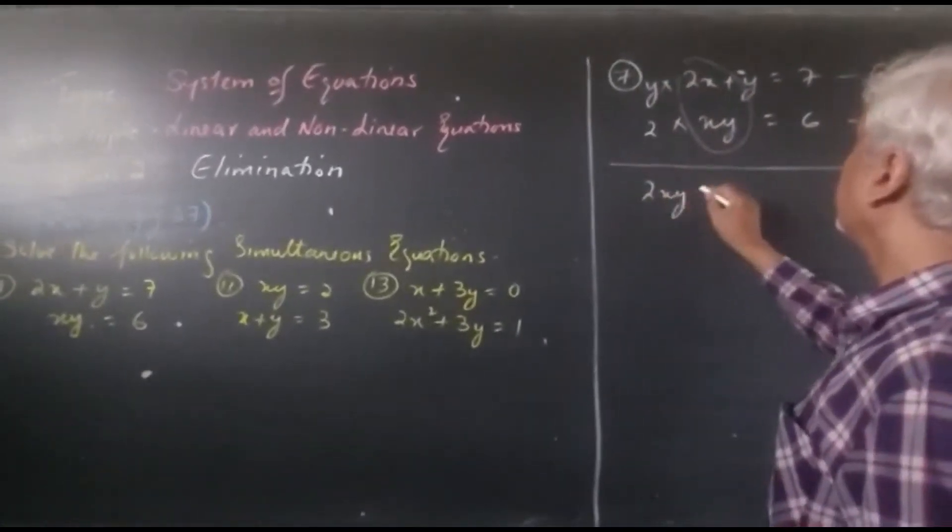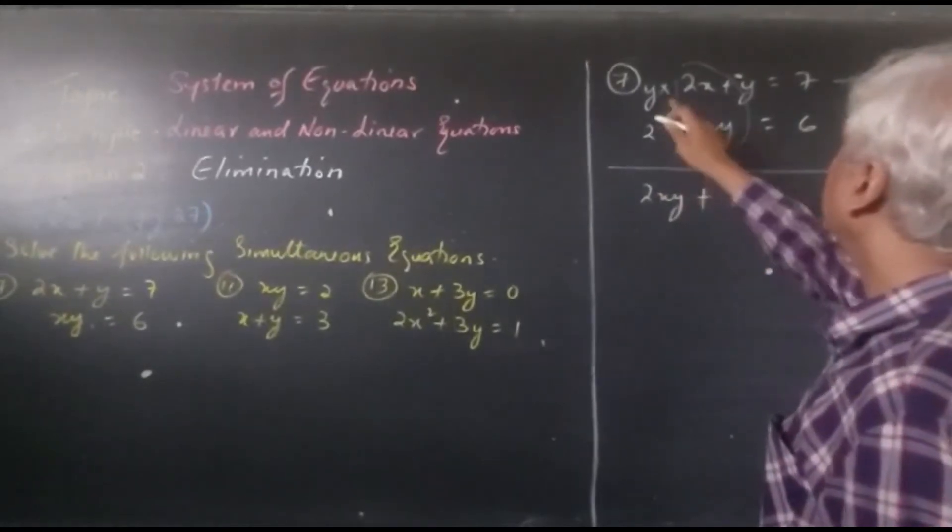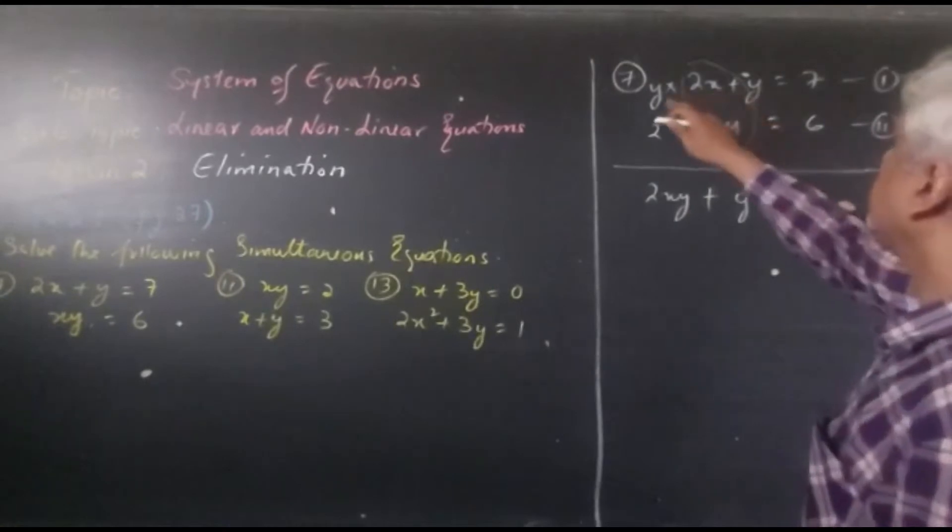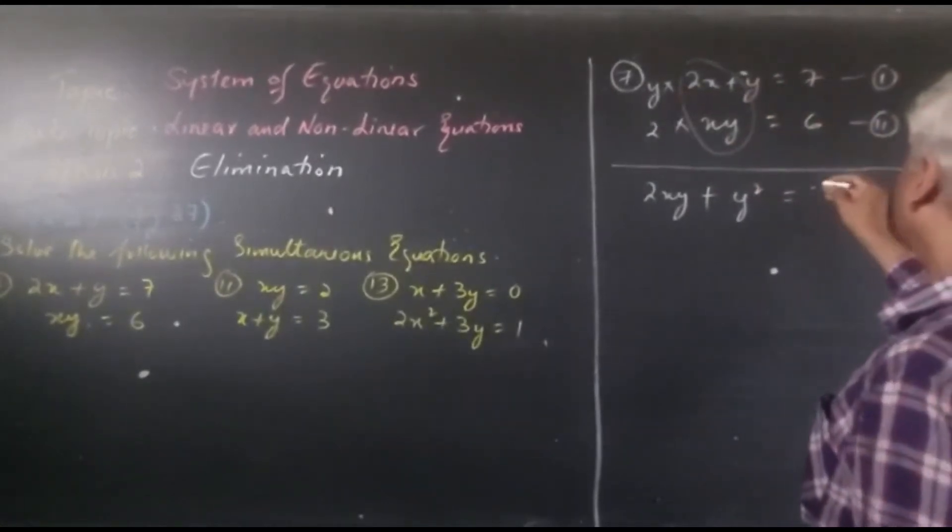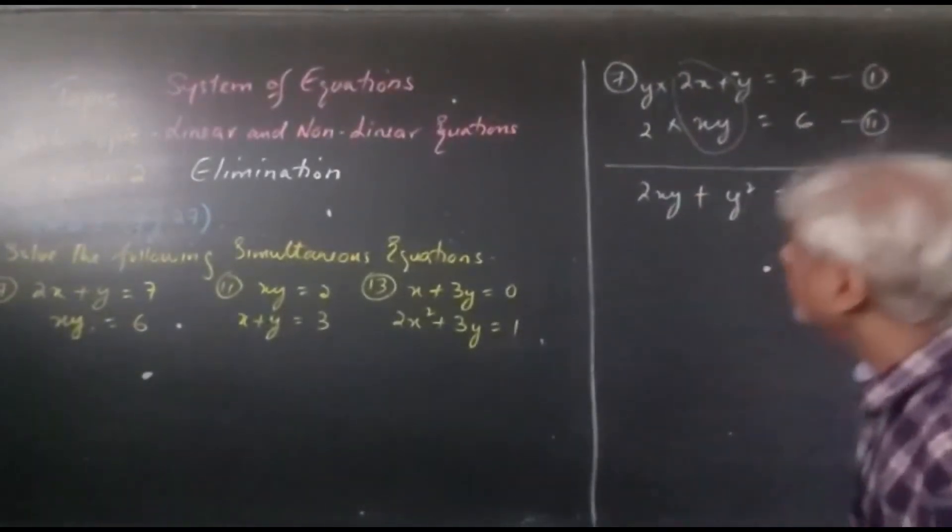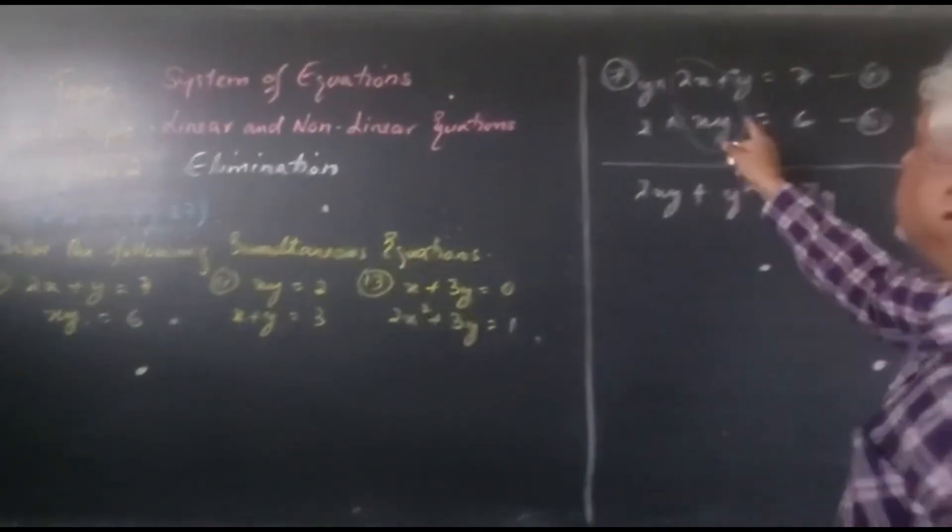So now let's solve this. 2xy plus y times y, y squared equals 7y. We are multiplying the whole equation with 1.